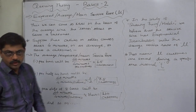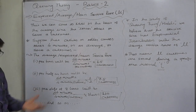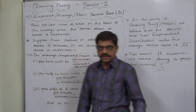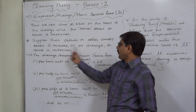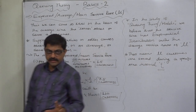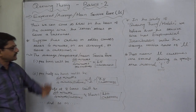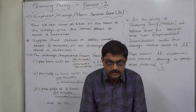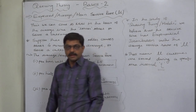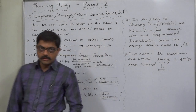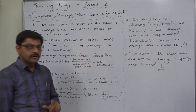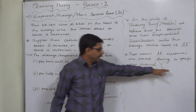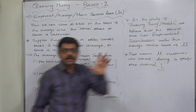Suppose, again on a teller counter, a cashier takes four minutes on average to serve a customer at the cashier's window or teller counter. Now, what can be the service rate for various possible values of a specific time interval t?